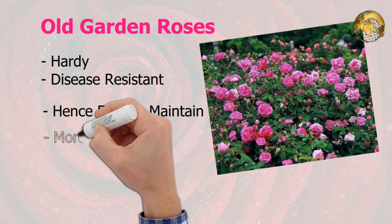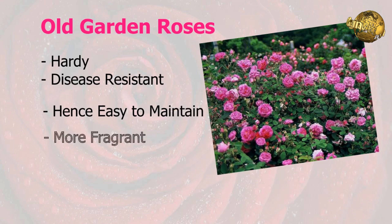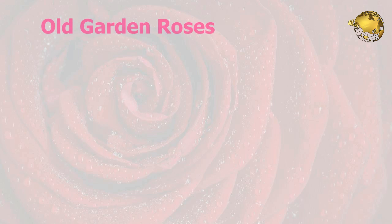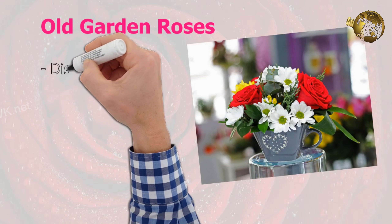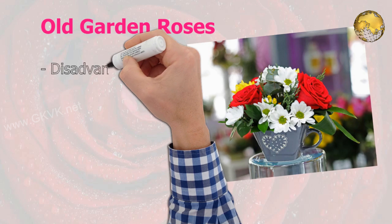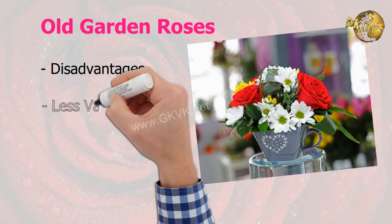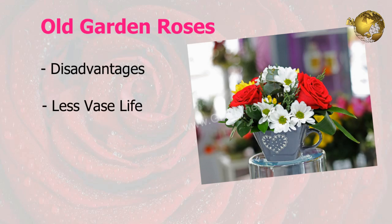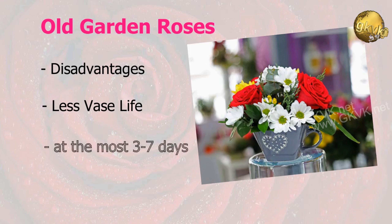Old Garden Roses are also much more fragrant than the Modern or Standard Roses. The downside of Garden Roses is that they generally do not have the vase life like Standard Roses, meaning the cut flowers do not stay longer in vases compared to Modern Roses. The stronger Garden Rose, i.e. the Desi Rose varieties, will last at the most 3–7 days, whereas the Standard Rose, i.e. the Modern Rose or English Rose varieties, can last up to 2 weeks.